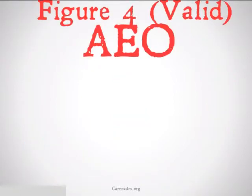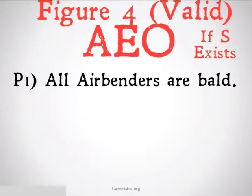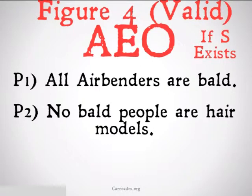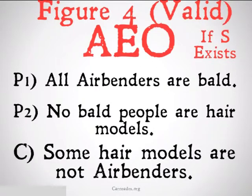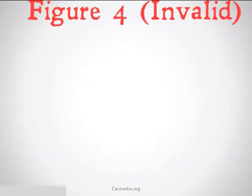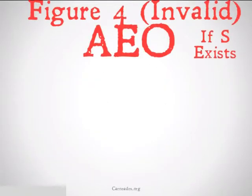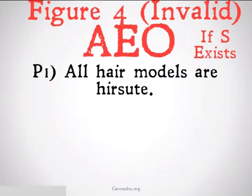Figure 4 valid for AEO — this is only going to be valid if S exists. All airbenders are bald. No bald people are hair models. Therefore, some hair models are not airbenders. This is going to be valid because the only thing that needs to exist is S — bald people. Bald people do exist, therefore it is valid.